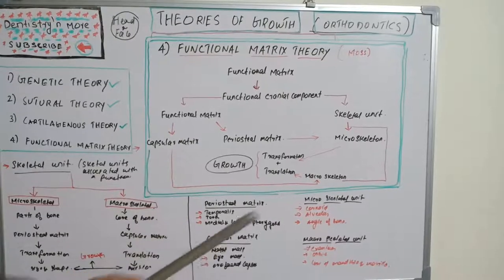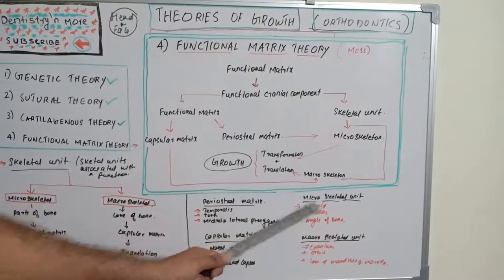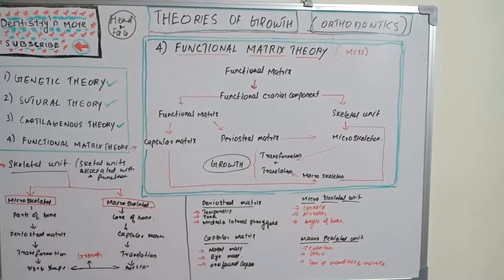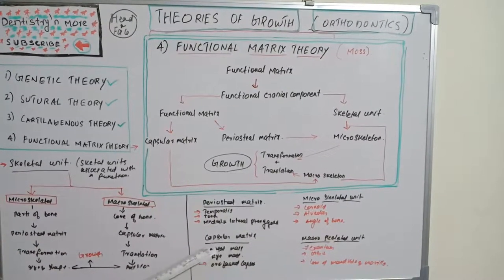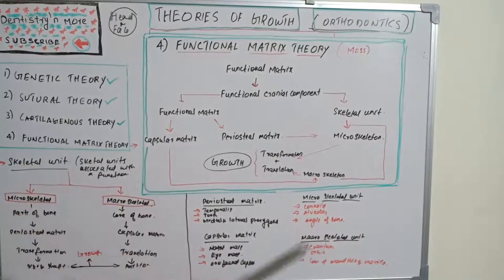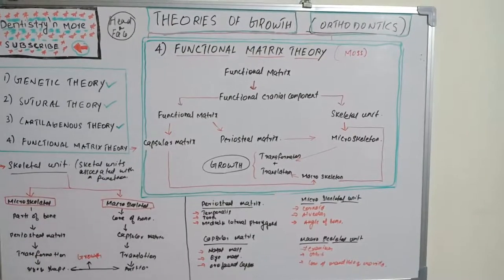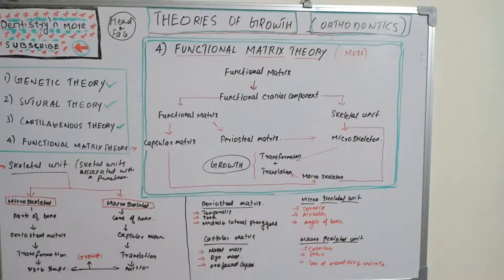For example, periosteal matrices: the temporalis muscle is associated with the coronoid process; the tooth is associated with the alveolar bone; the medial and lateral pterygoid muscles are associated with the ramus — these are microskeletal units, which are parts of a bone. Capsular matrices such as the nasal mass, eye mass, and orofacial capsule: the nasal mass corresponds to the cranium, the eye mass to the orbit, and the orofacial capsule to the core of the mandible and maxilla.